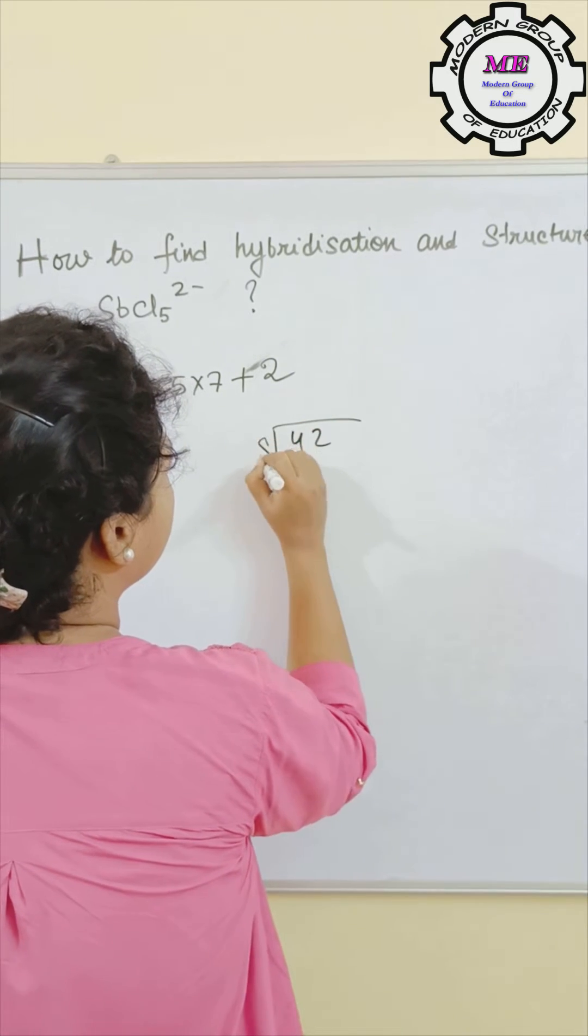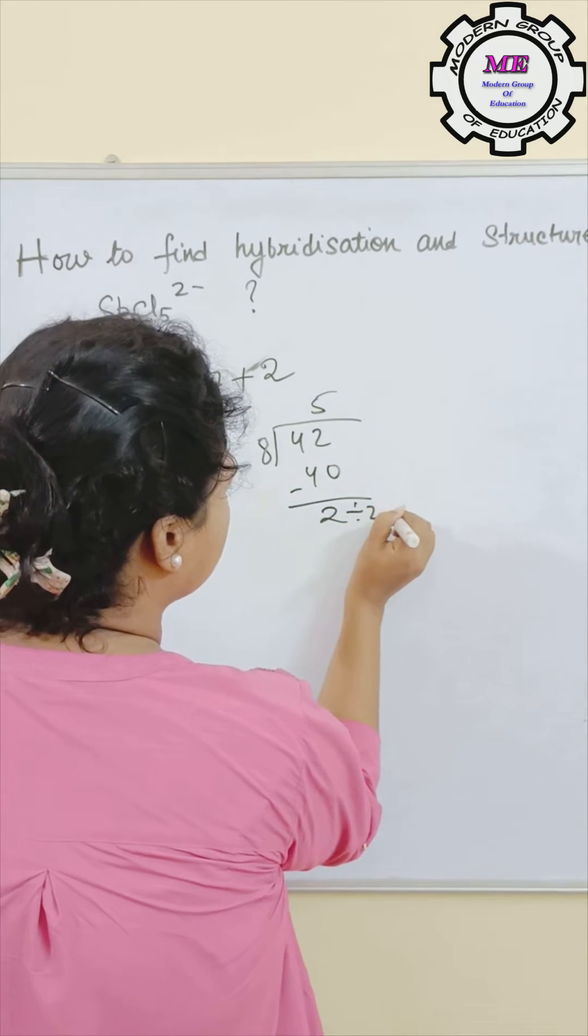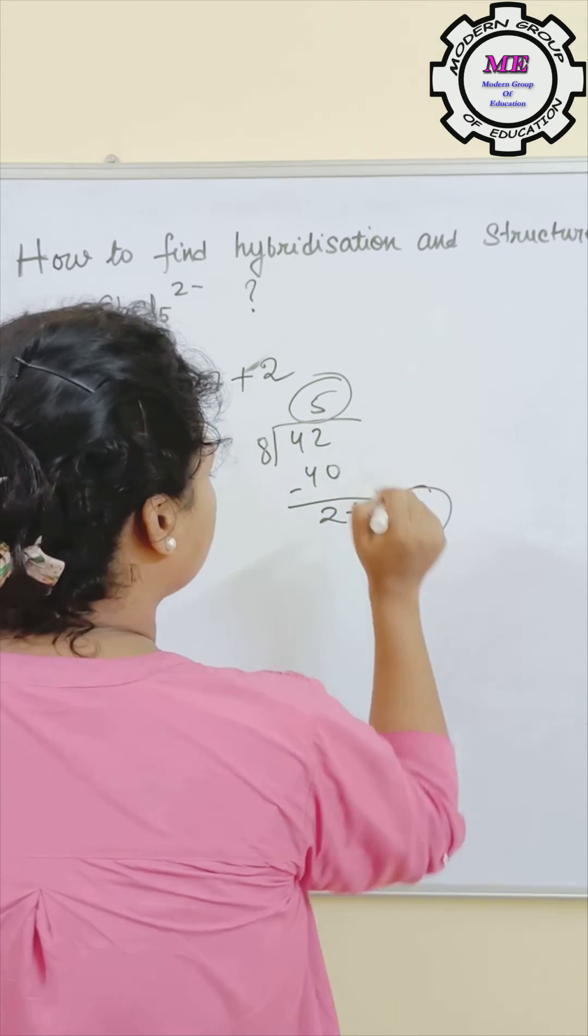You have to divide 42 by 8. 8 fives are 40 minus 2 divided by 2 that is 1. So there are 5 bond pairs and 1 lone pair. 5 plus 1 is 6.